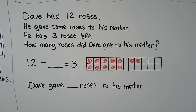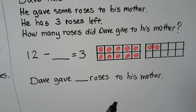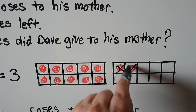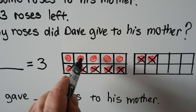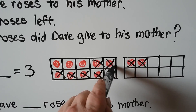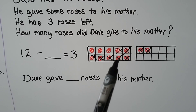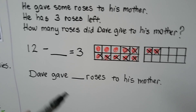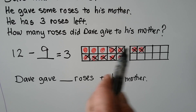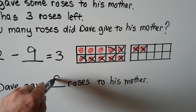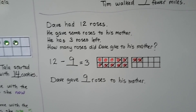And if he only has 3 roses left, we can cross out and take away counters until there are only 3 left. We take away these and these, and we only want 1, 2, 3 left, so we still need to cross these out. So how many did we cross out? We crossed out 1, 2, 3, 4, 5, 6, 7, 8, 9. That means Dave gave 9 roses to his mother, because he's got 3 left from the 12. He had 12, gave 9 to his mother, and now has 3 left.